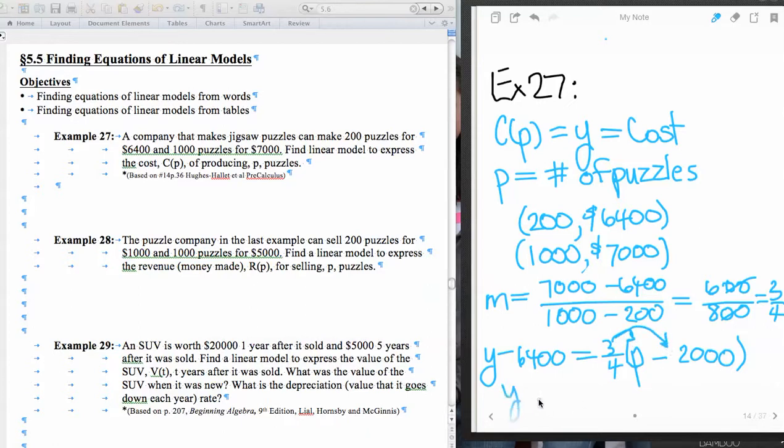So y minus 6,400. And then we have 3 quarters P. And then once I have 3 quarters P, the next thing that I have is multiplying. So 4 will go into 200 50 times, and 3 times 50 is 150. And now the last thing I do is I'm going to add the 6,400 here and 6,400 here.